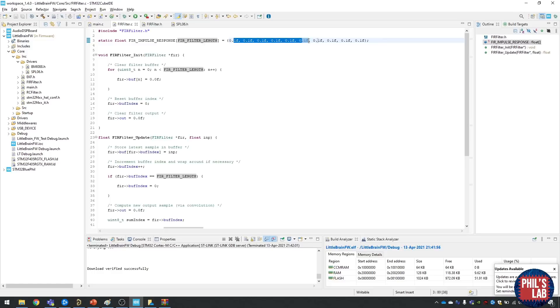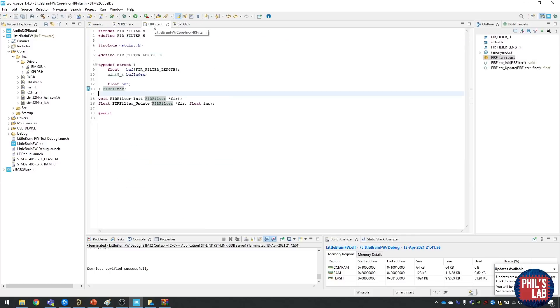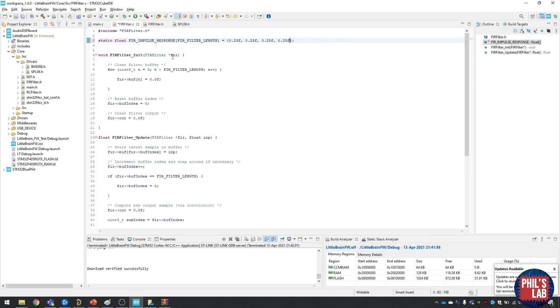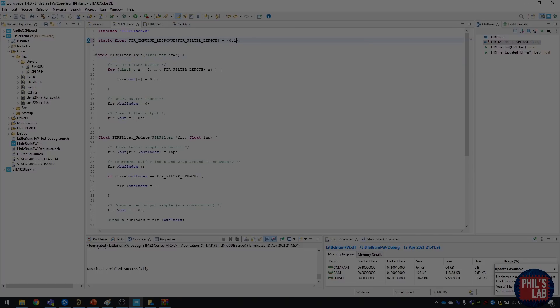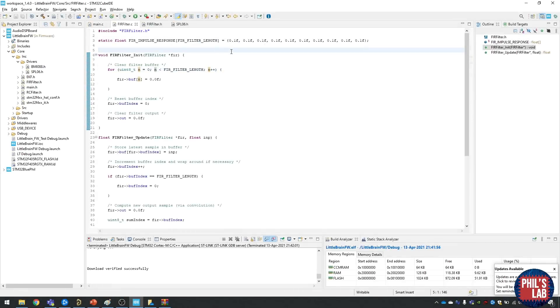Now if I would like to make a 4-point moving average filter I would of course have to change this to 1 over 4 or 0.25 and have 4 of those values in there. Then of course I also have to change the FIR filter length from 10 to 4 for example. But I'll keep it at 10 for now so let me just undo all of that and now we have a 10-point moving average filter by reusing our FIR filter headers and libraries, so that's really cool.